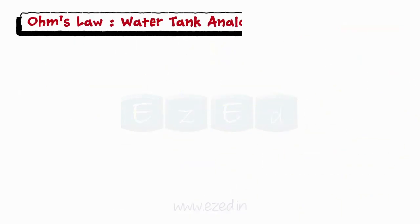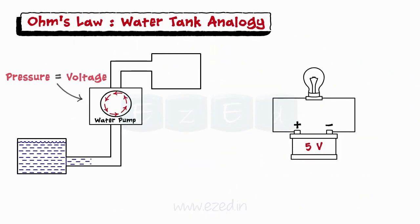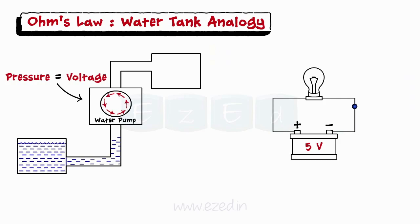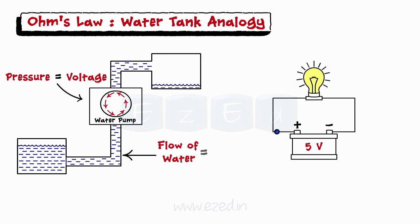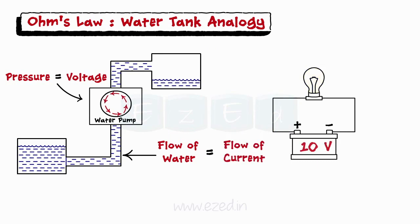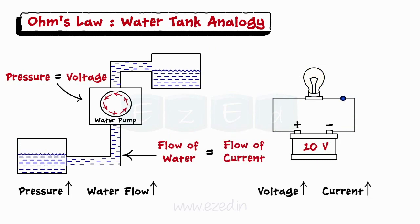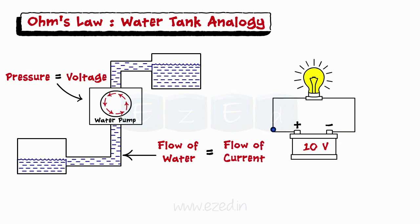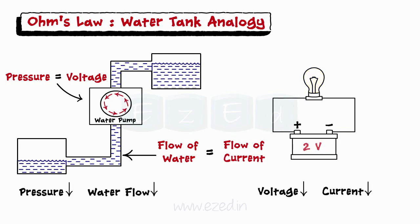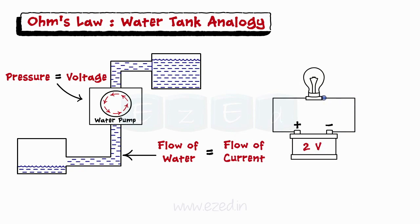Consider the water tank analogy in which the pressure exerted by the pump is considered as a voltage and the flow of water is considered as a current. If we increase the pressure, the water flow increases and if the pressure is reduced, the water flow reduces. This shows that the flow of water is proportional to the pressure applied.